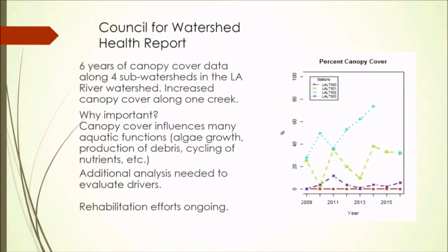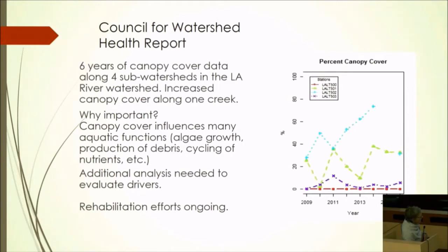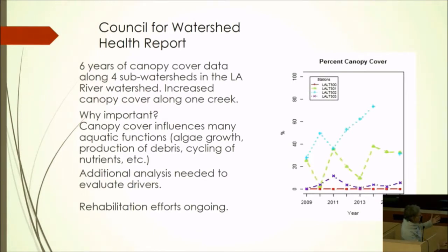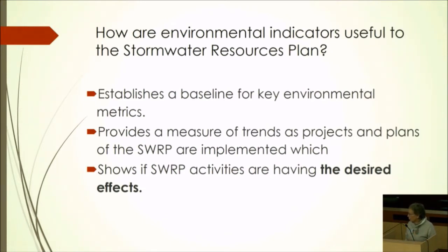Another example looks at canopy cover. As was mentioned earlier today, trees and canopy cover in the riparian corridor have important functions affecting what happens in creeks and waterways. Best management practices for managing stormwater and the space provided for creek corridors have a huge influence on these metrics. Environmental indicators can establish a baseline for key environmental metrics, provide a measure of trends for the projects and plans being developed, and show whether a resource plan is having the desired environmental effects on the aquatic ecosystem — which is in large part the impetus for these plans.